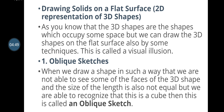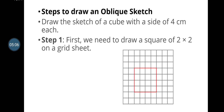In an oblique sketch, the shape is drawn in such a way that we are not able to see some of its faces, and the size of the length is not equal, but we can still recognize the shape as a cube. In the diagram, to draw a 3D shape on a 2D surface, the first step is to draw a square of 2×2 on a grid sheet.